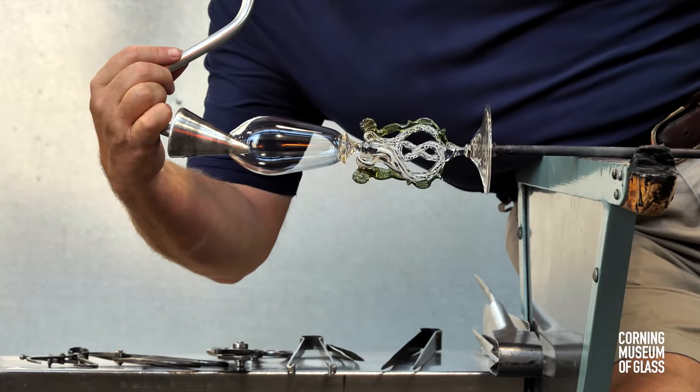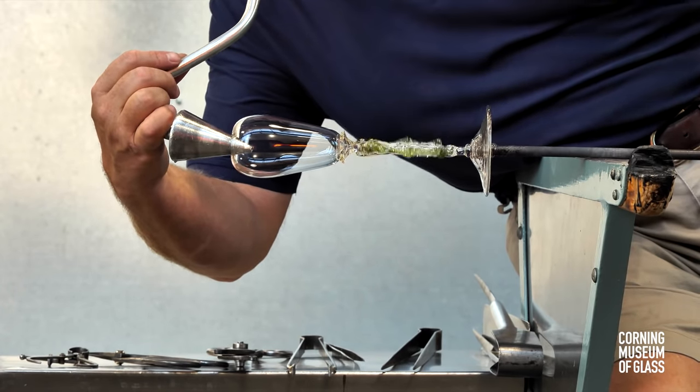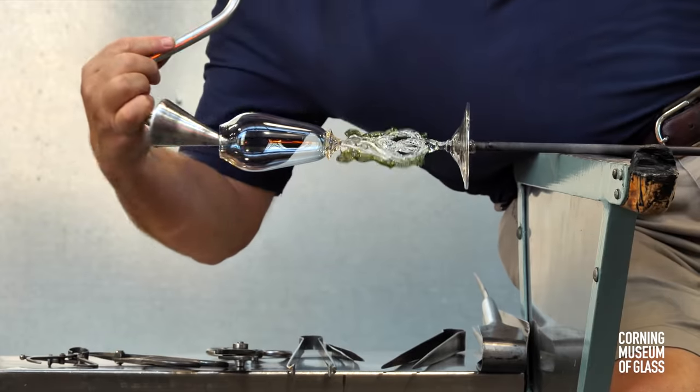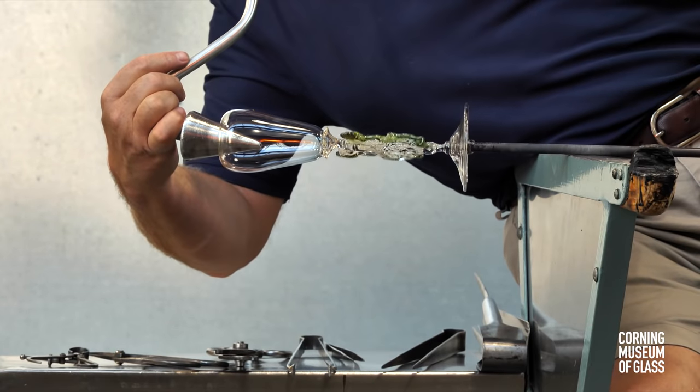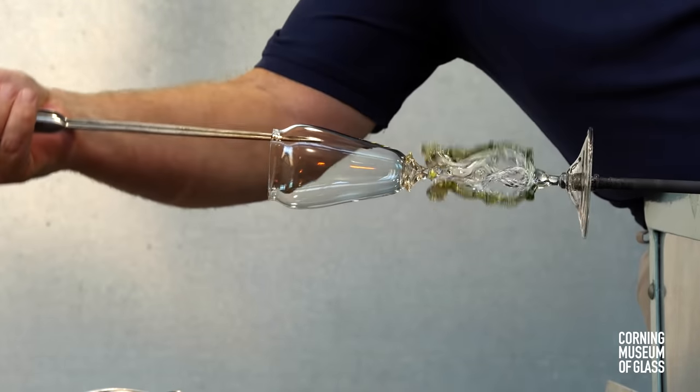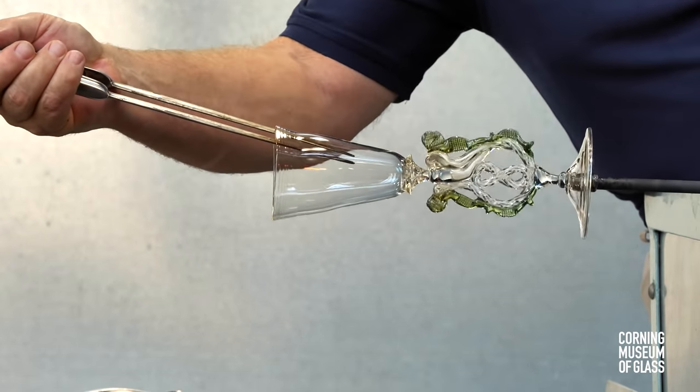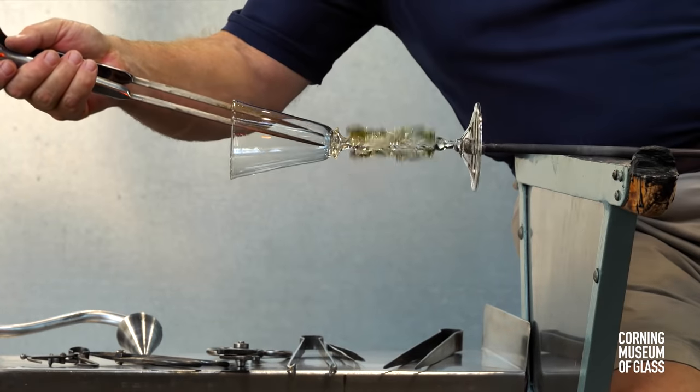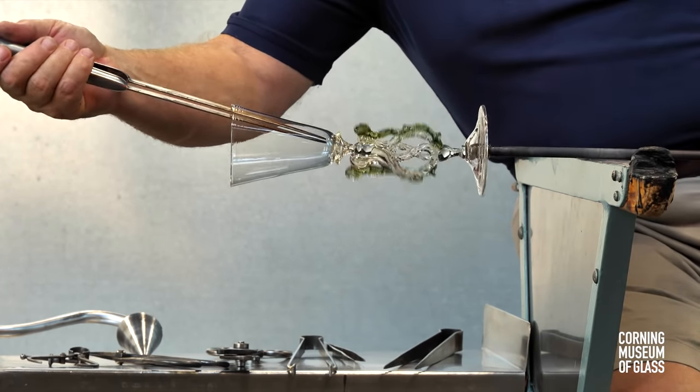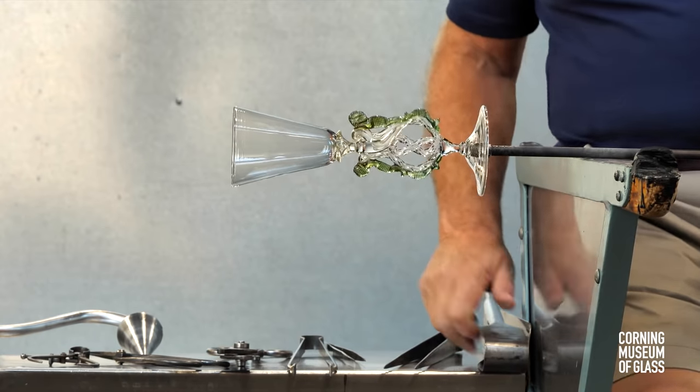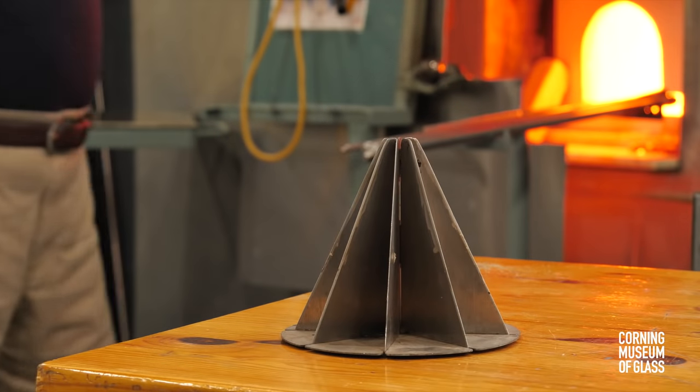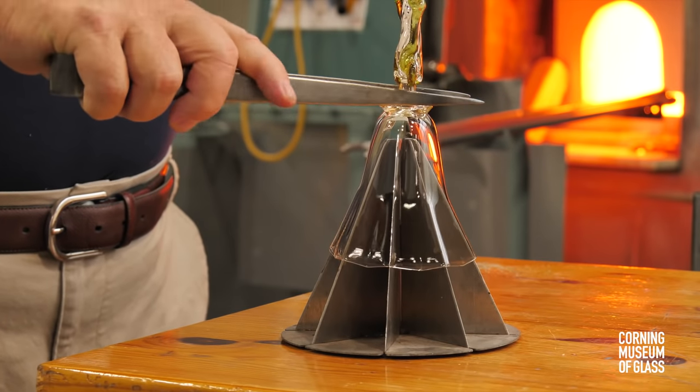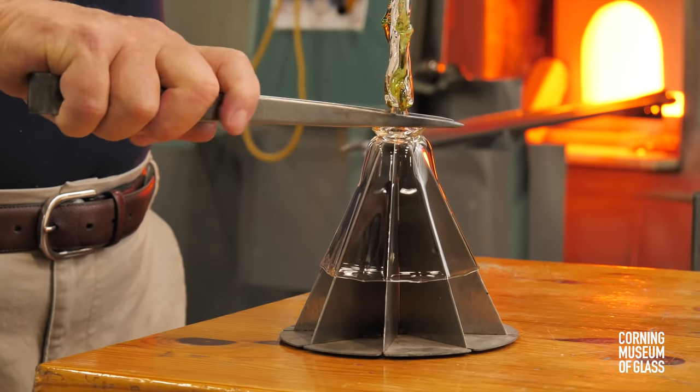The soffietta is used to shape the uppermost part of the vessel. The jacks are used to give the vessel a conical form, and the entire cup is softened slightly and pushed forcefully down onto the fin mold, and this creates the octagonal pattern.